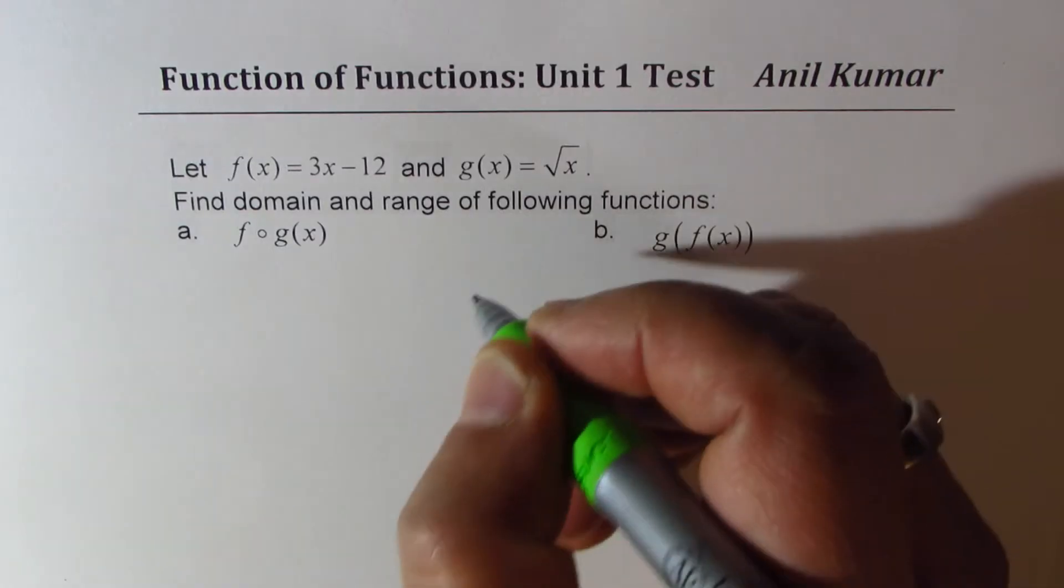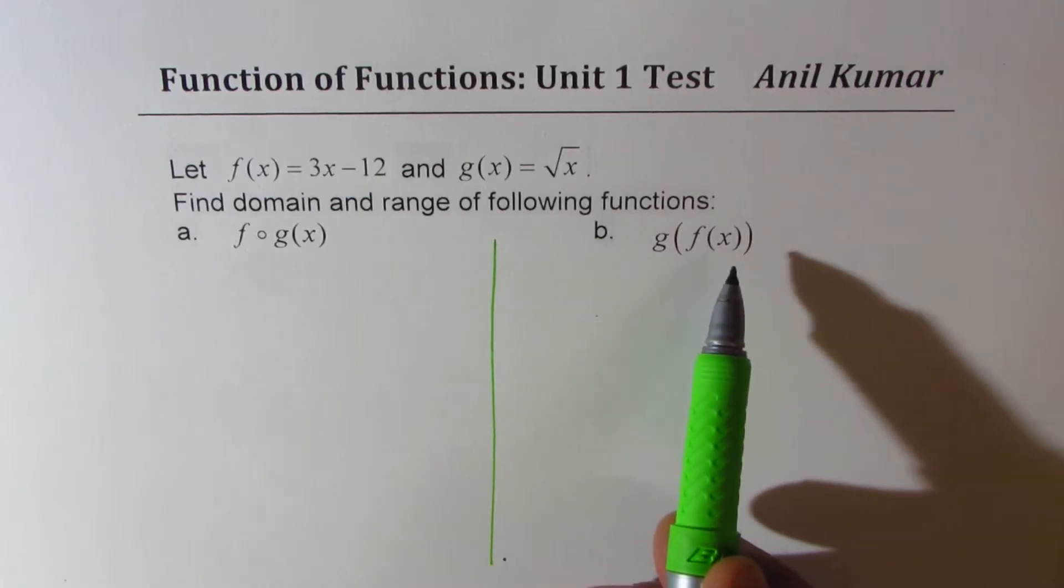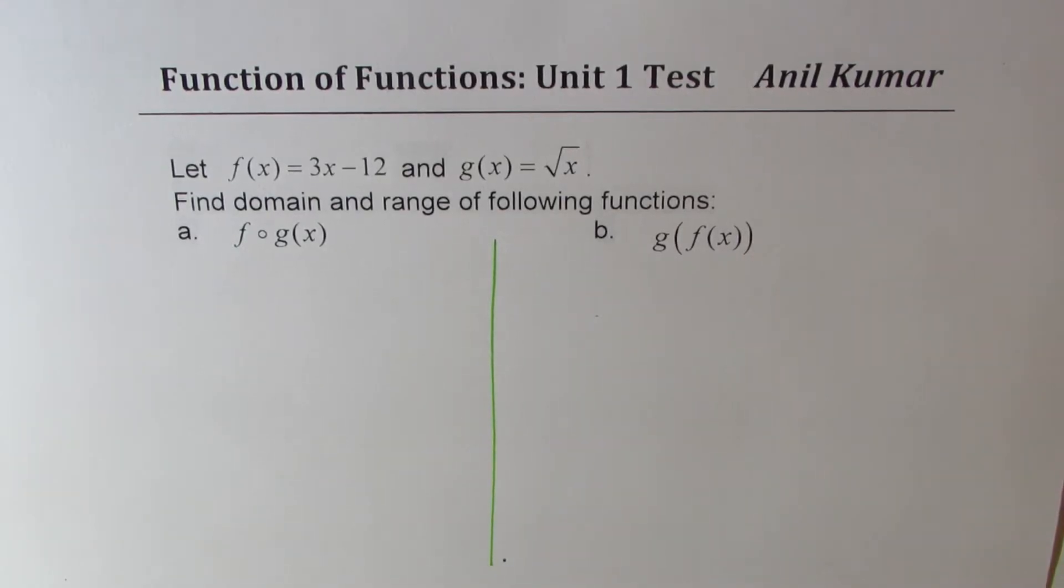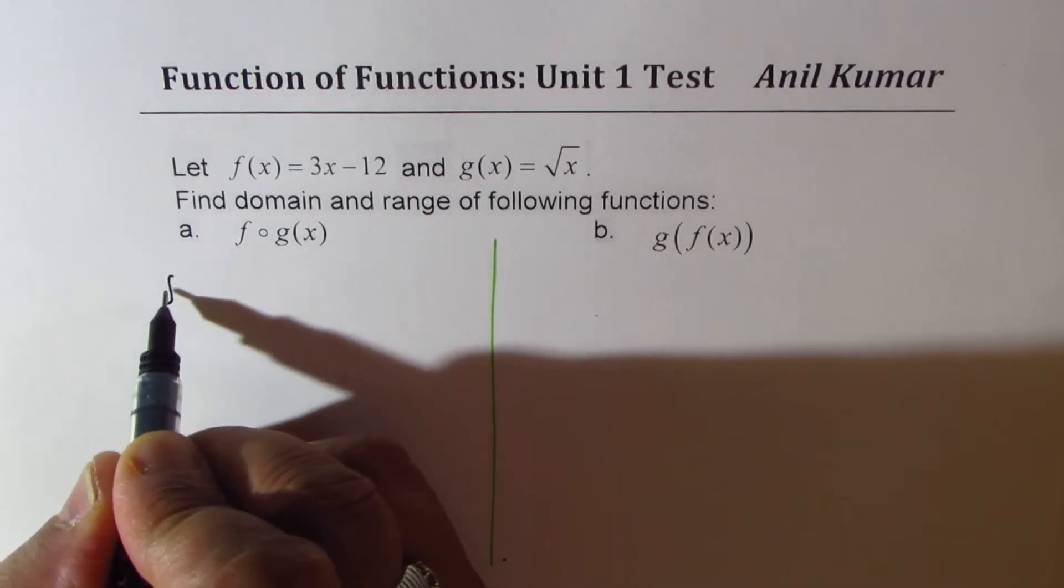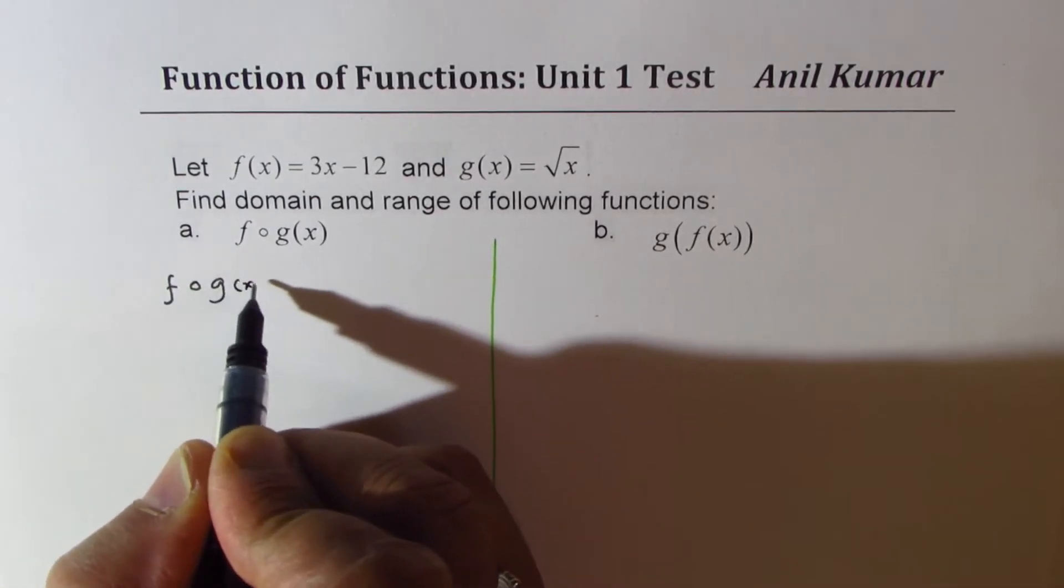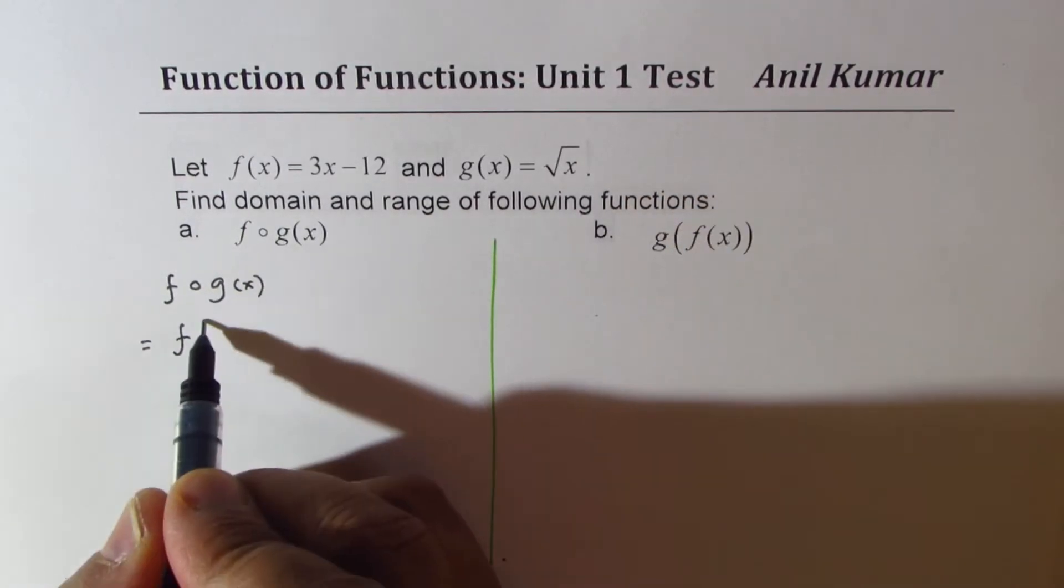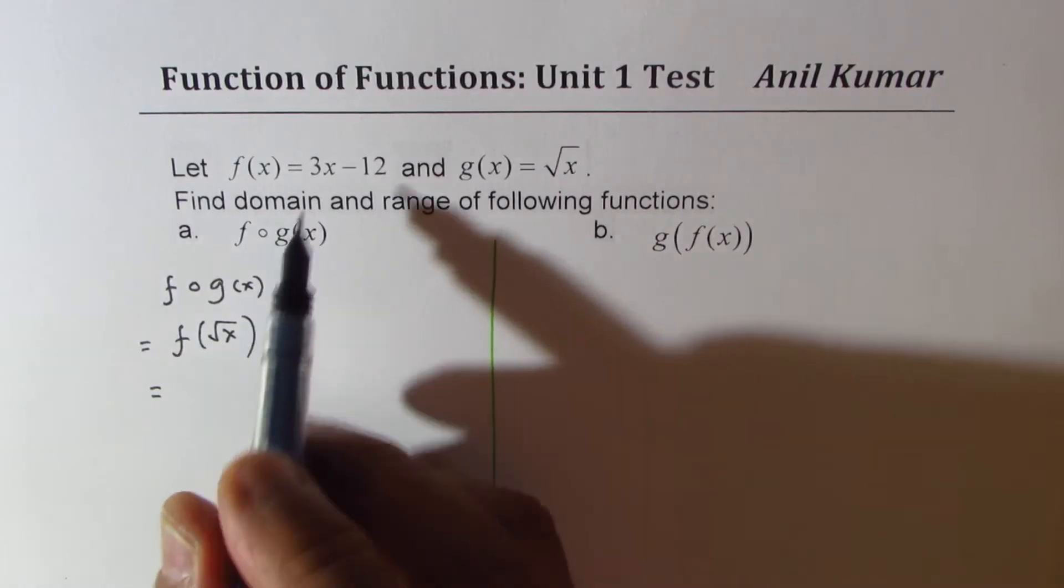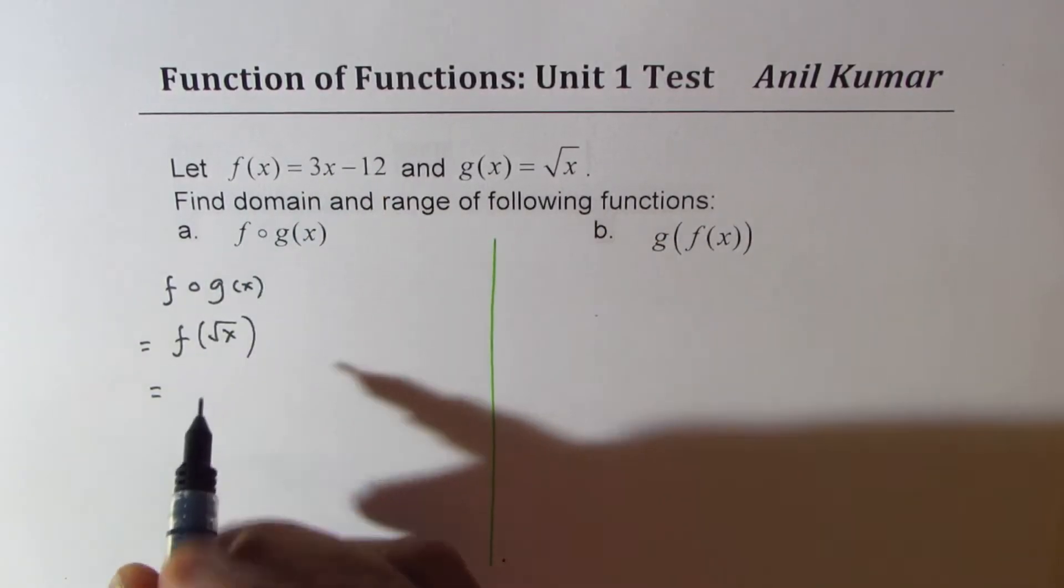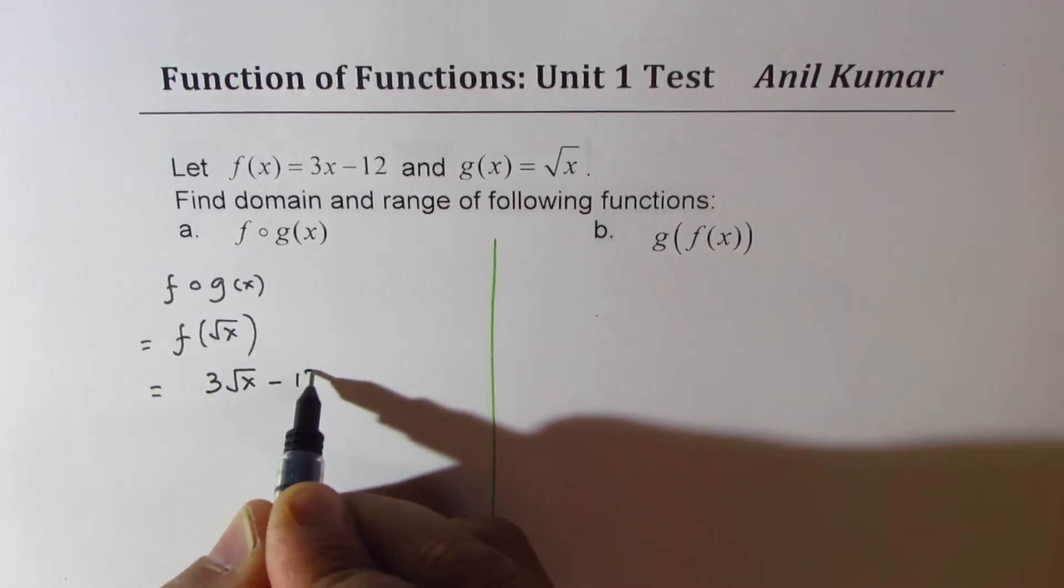So we need to find domain and range of f of g of x and g of f of x. So what is f of g of x? f of g of x is basically equal to f of square root x. So to find that, replace x with square root x in f of x equation. So we get 3 square root x minus 12.